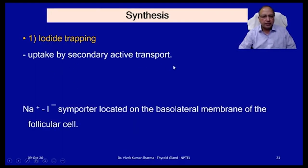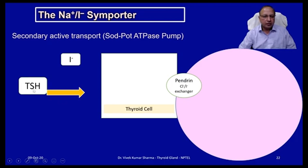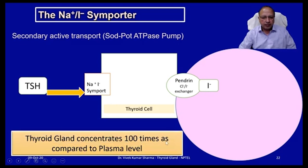Iodide trapping occurs by secondary active transport, primarily through the sodium-iodide symporter (NIS) located on the basolateral membrane of the follicular cell. Iodide comes from the circulation into the thyroid cell. When TSH stimulates the thyroid cell, it stimulates the NIS pump on the basolateral membrane, which takes iodide against the electrochemical gradient. From there, iodide crosses the thyroid cell and passively via the pendrin chloride-iodide exchanger goes into the colloid. The thyroid gland concentrates iodide 100 times or more compared to plasma levels.